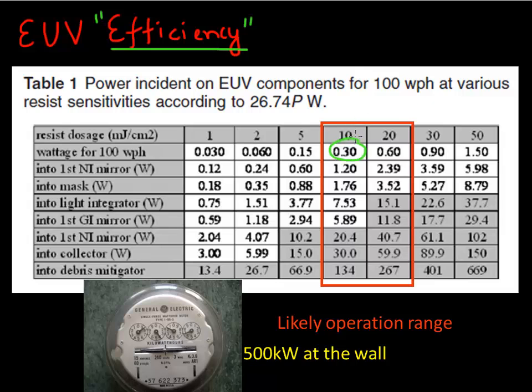So suppose you need a dose of 30 millijoules on your resist. That's the typical sensitivity that you require for your resist. So what you need to achieve that much dose on your resist is you need around 1 watt on your mirror that's just facing the wafer. And to generate that 1 watt on your mirror which is just facing the wafer, you need a source of 130 watt.